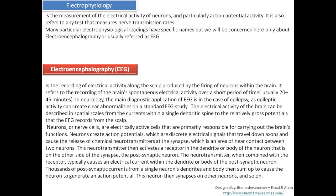EEG refers to the recording of the brain's spontaneous electrical activity over a short period of time — usually from 20 to 45 minutes, though some labs extend it up to one hour. In neurology, the main diagnostic application of EEG is epilepsy; approximately 90% of EEG exams are done for epilepsy diagnosis, as epileptic activity can create clear abnormalities on a standard EEG study. However, even if a patient has epilepsy or seizures, there is also a possibility their EEG may appear normal.